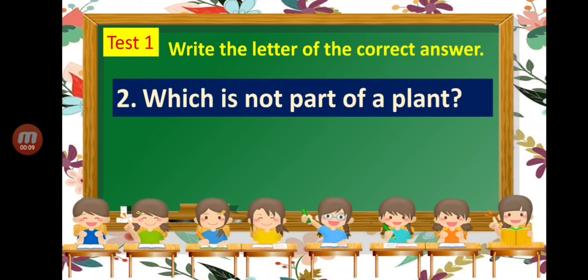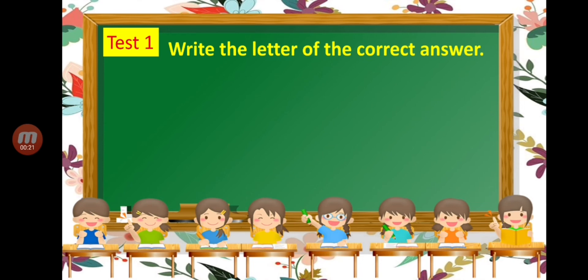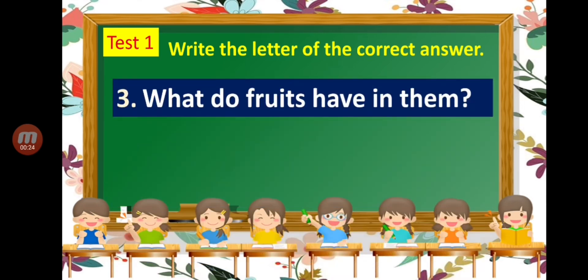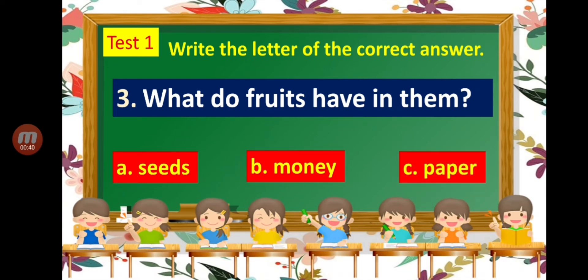Number two: which is NOT a part of a plant? A — roots. B — pencil. C — stem. Number three: what do fruits have in them? A — seeds. B — money. C — paper.